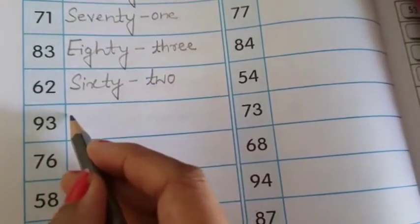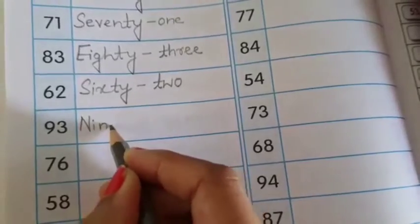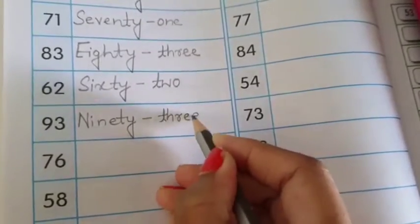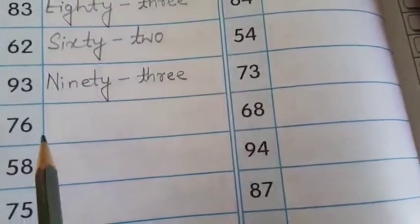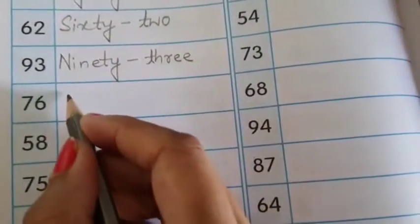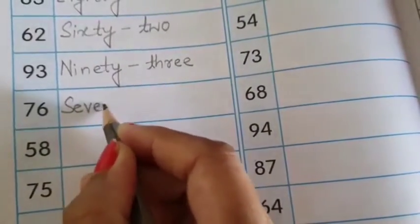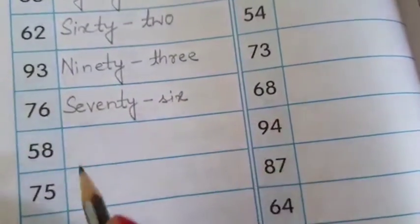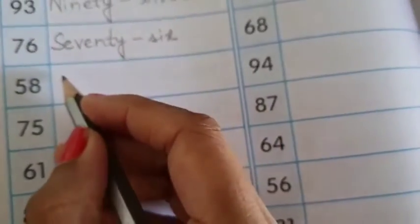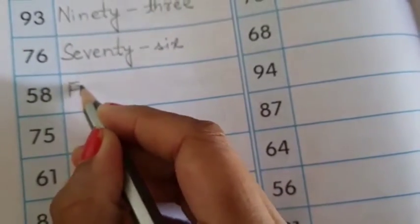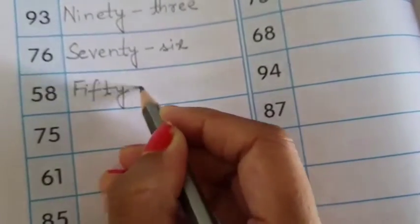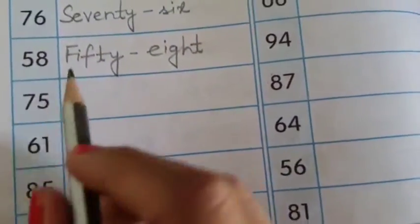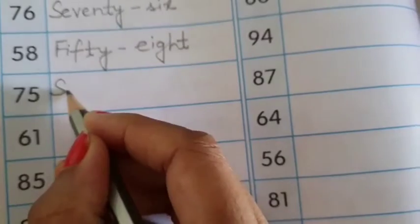93. Write down NINETY 90 THREE 3, 93. 76. SEVENTY 70 SIX 6. Next 58. FIFTY 50 EIGHT 8.